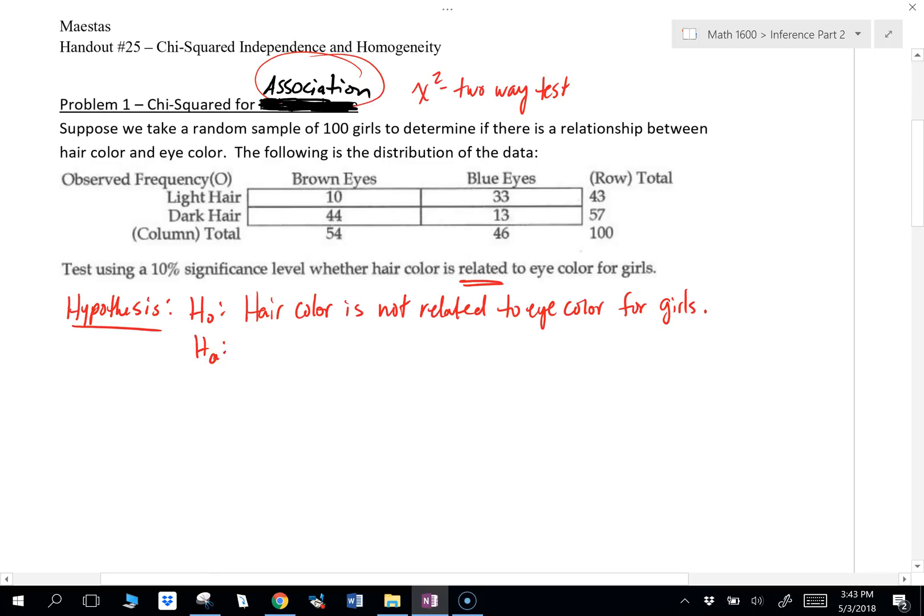So what would be our alternative hypothesis? Is related, right. Hair color is related to eye color for girls. Yep. Easy. Easy peasy. Lemon squeezy.